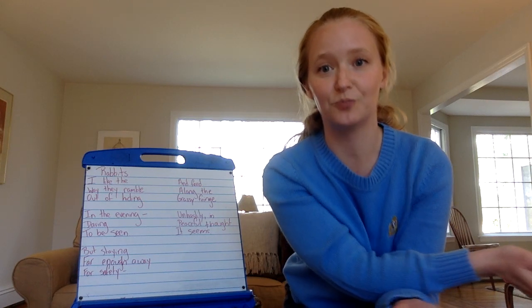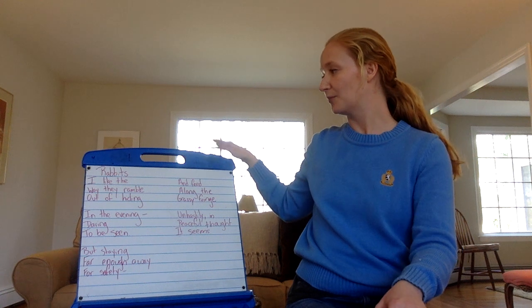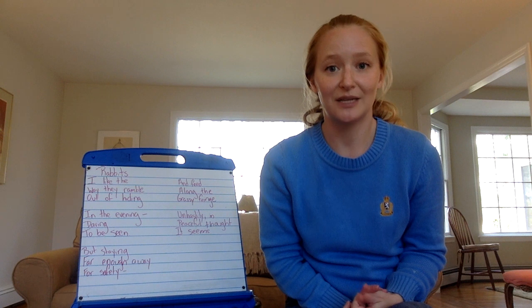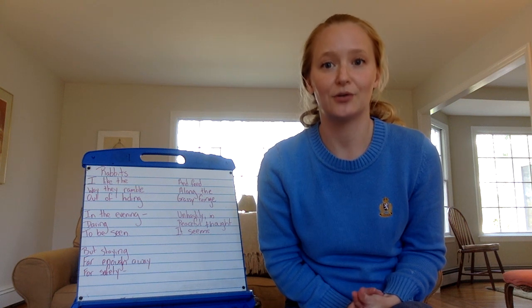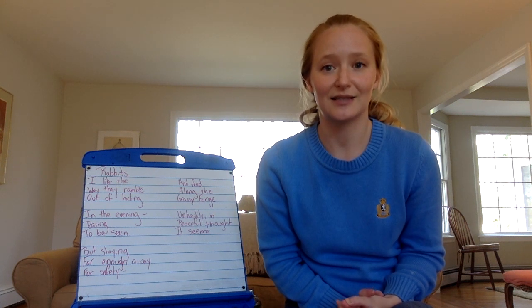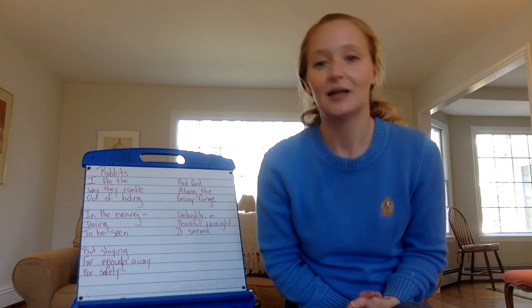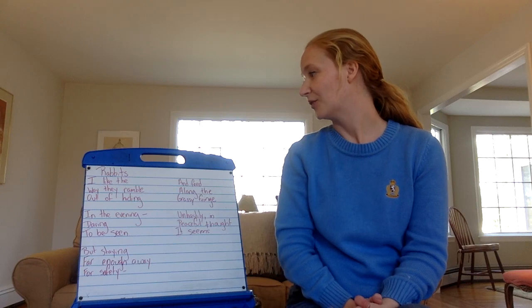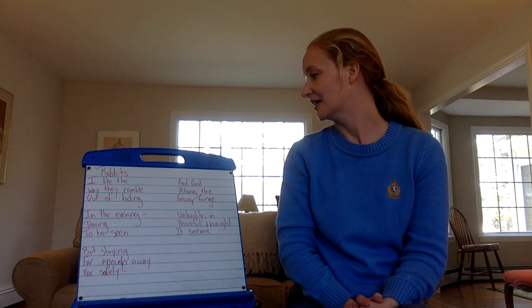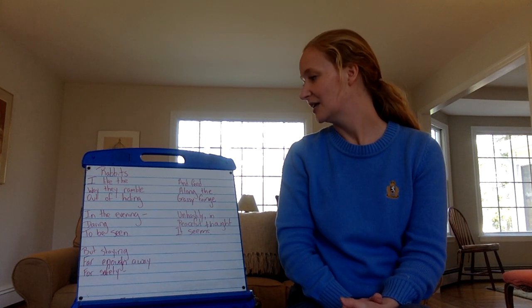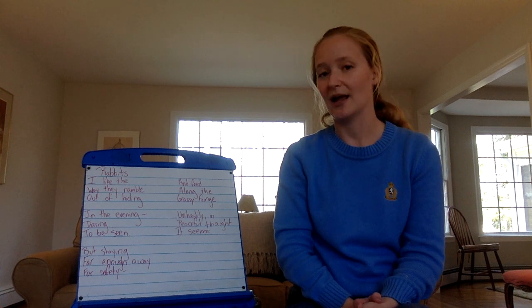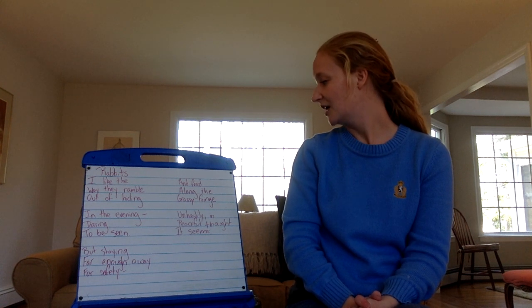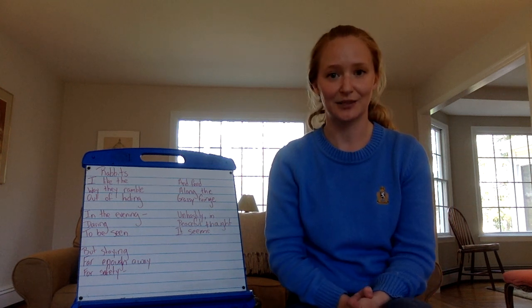And so today I want to bring us to this poem called Rabbits. And I want us to really, as I read it, I want you to be thinking about the words that are very precise and honest in the poem. So the poem is called Rabbits. I like the way they ramble out of hiding in the evening, daring to be seen, but staying far enough away for safety and feed along the grassy fringe. Unhastily in peaceful thought it seems.